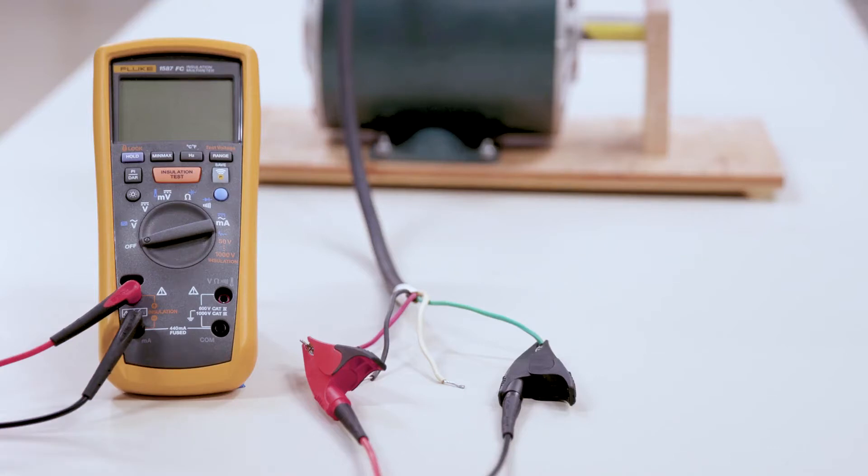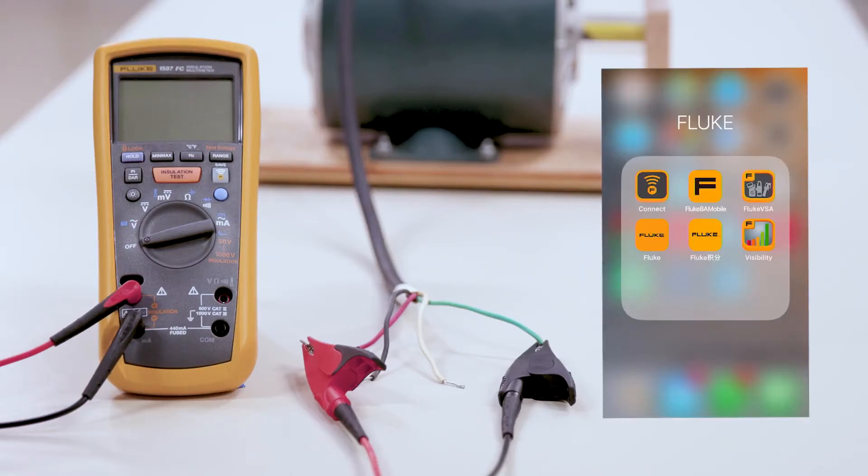Before we do that though, we want to get into our Fluke Connect app so we can save the measurements that we're doing for later purposes. You'll want to download the Fluke Connect app either through the Google store or through your app store. As you can see, I've already downloaded the app and I'm going to go ahead and get into the Fluke Connect app.